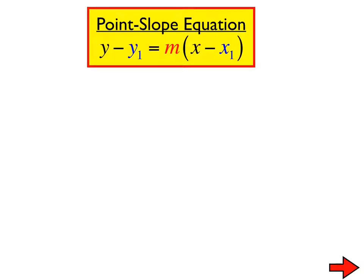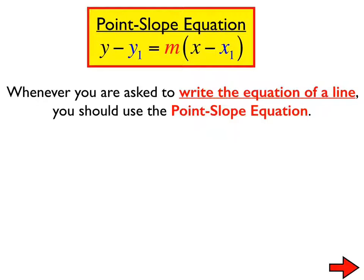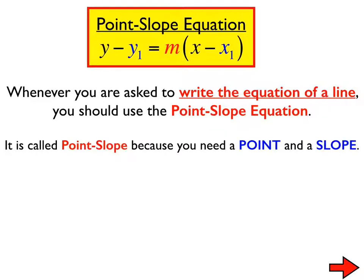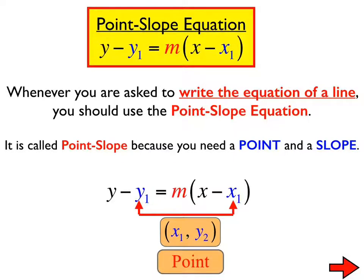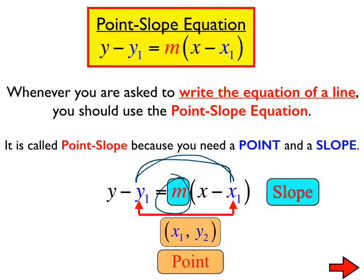Sometimes it's called point-slope form, but this formula is something you'll need to memorize. It's a quick, easy way of finding the equation of a line, and we'll use it a lot over the next couple of weeks. It's called the point-slope equation because you need a point and a slope. The x-sub-1 and y-sub-1 are where we put our ordered pair; the regular x and y stay as variables; and m is the slope.